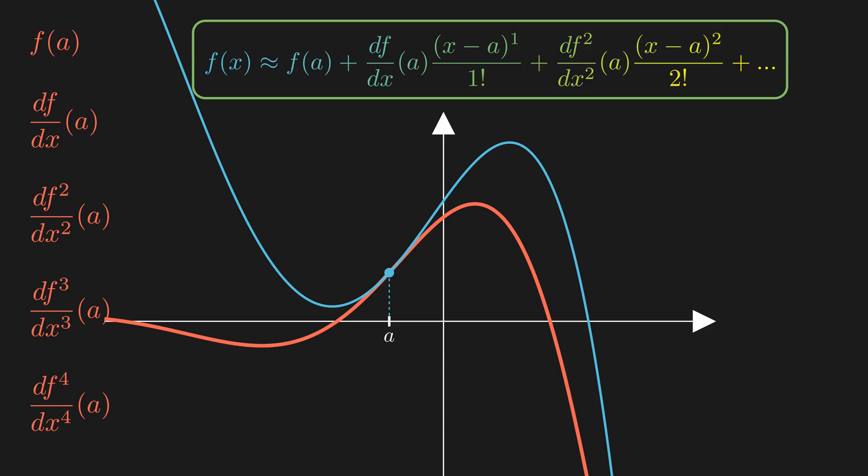By changing the value of A, you can make the polynomial match the function around any point you like. The Taylor series is a fascinating way to predict the behavior of a function using only derivative information at a single point. Computers can't directly calculate trigonometric, logarithmic, or exponential functions. They rely on Taylor series to find approximate values.